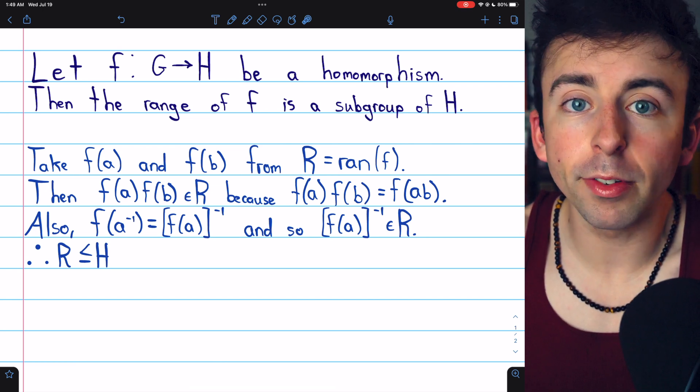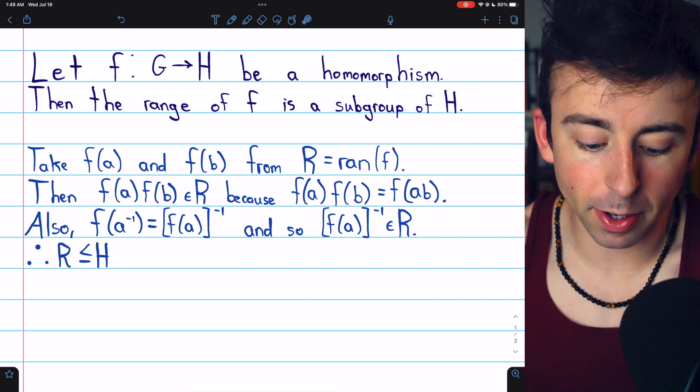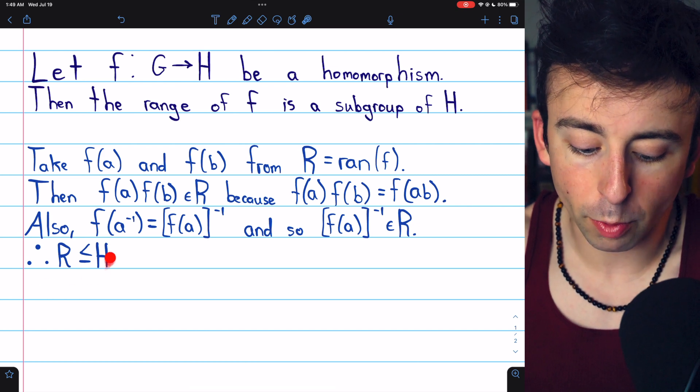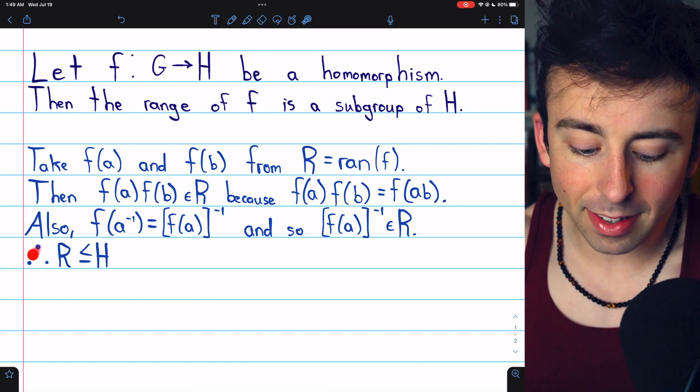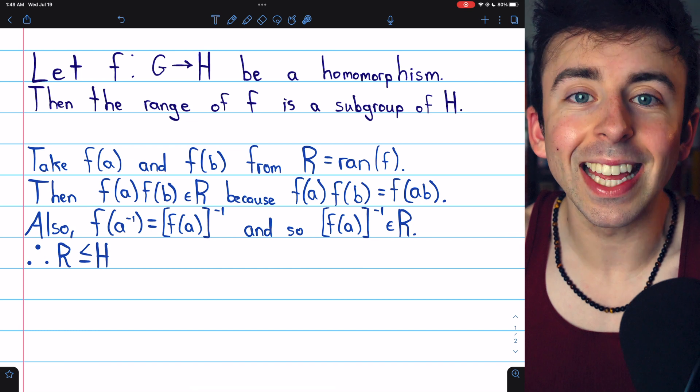Thus, we've shown the range is closed with respect to products and inverses, and so R, the range of the homomorphism, is a subgroup of the codomain H.